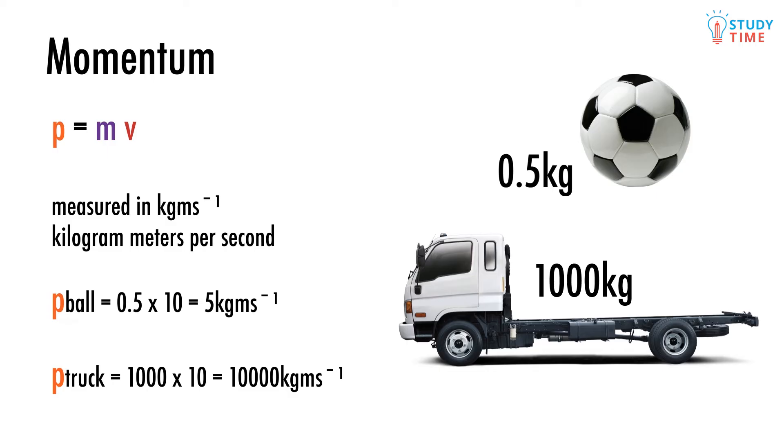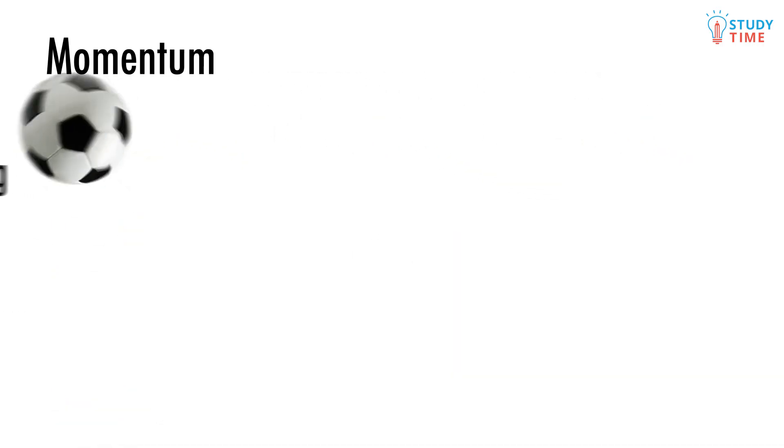Those numbers probably help explain why it's a better idea to not jump in the middle of a truck's path. We're now going to take a look at what happens when two objects that both have their own momentum run into each other.